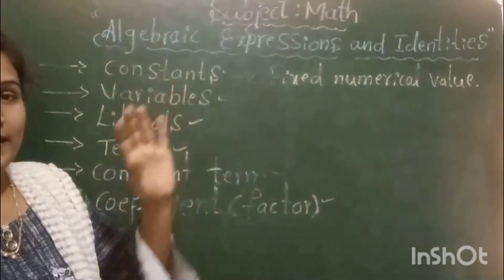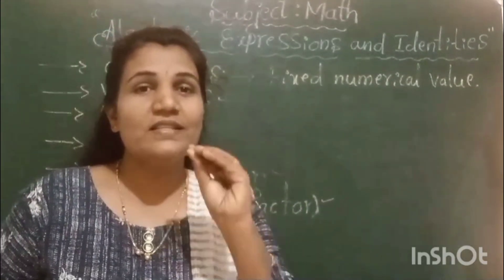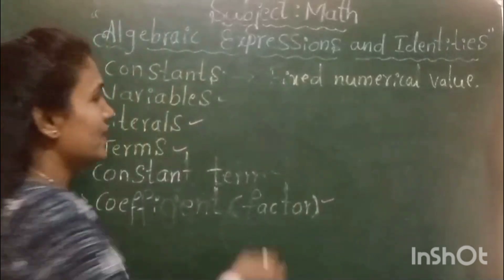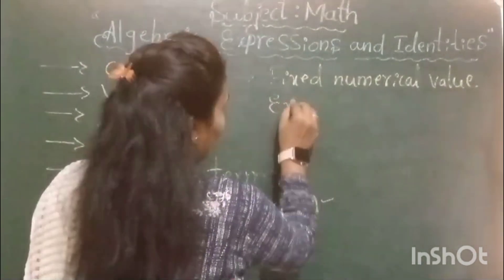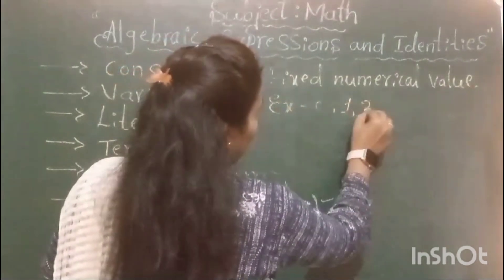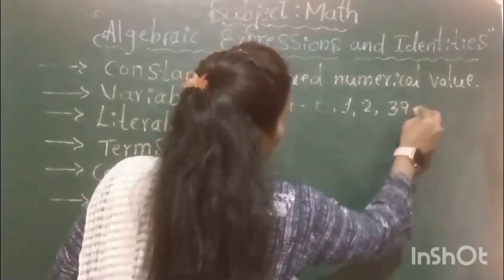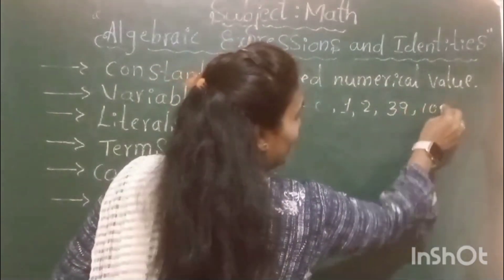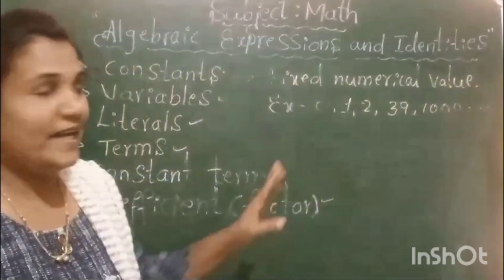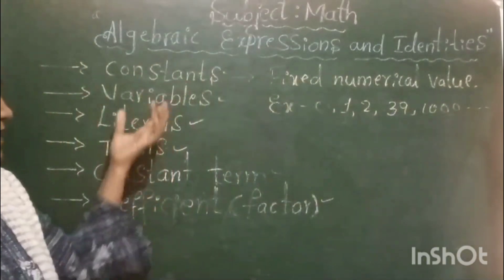A constant is a quantity which has a fixed numerical value. Examples for constant: 0, 1, 2, 39, 1000, etc. These all are examples of constants.